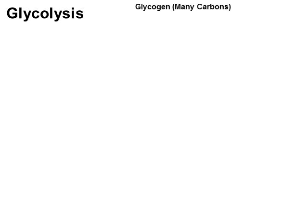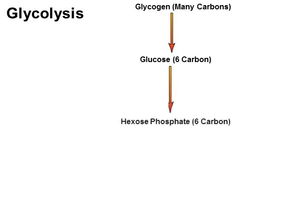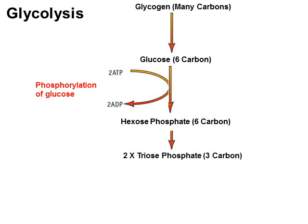In glycolysis, the sloth's cells release glucose from the glycogen store. Each glucose molecule has six carbons: C₆H₁₂O₆. Counterintuitively, the first thing that happens is that ATP is actually used to activate the glucose — two ATPs are dephosphorylated and the phosphate is attached to the glucose to produce hexose phosphate, still six carbons. The hexose phosphate is then split into two three-carbon triose phosphates.